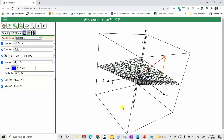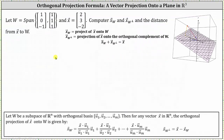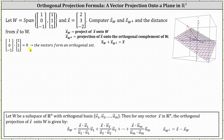Going back to our work, let's first check to make sure that vector u sub one and vector u sub two are orthogonal by checking the dot product. Because the dot product is equal to zero, we know the vectors form an orthogonal set, and therefore we can use the formula shown below to determine the projection of vector x onto W.